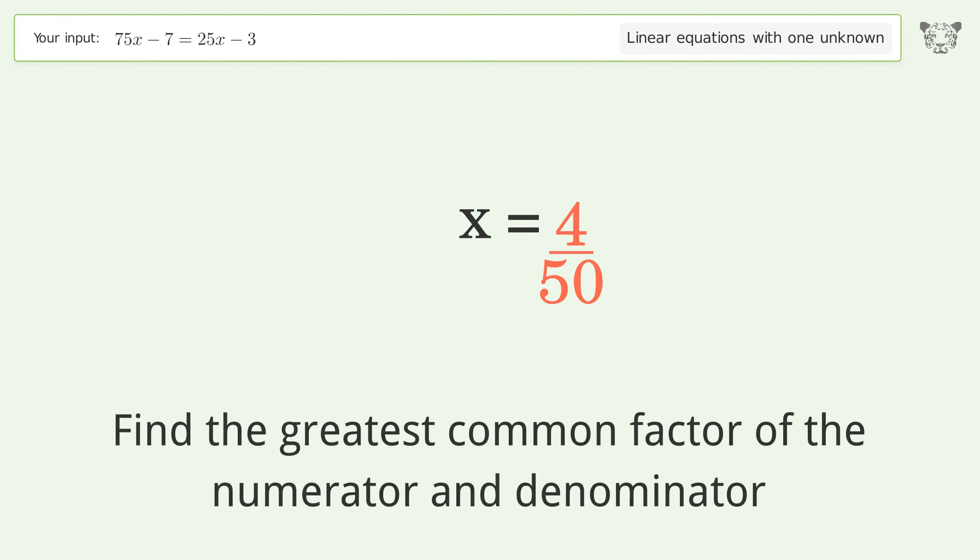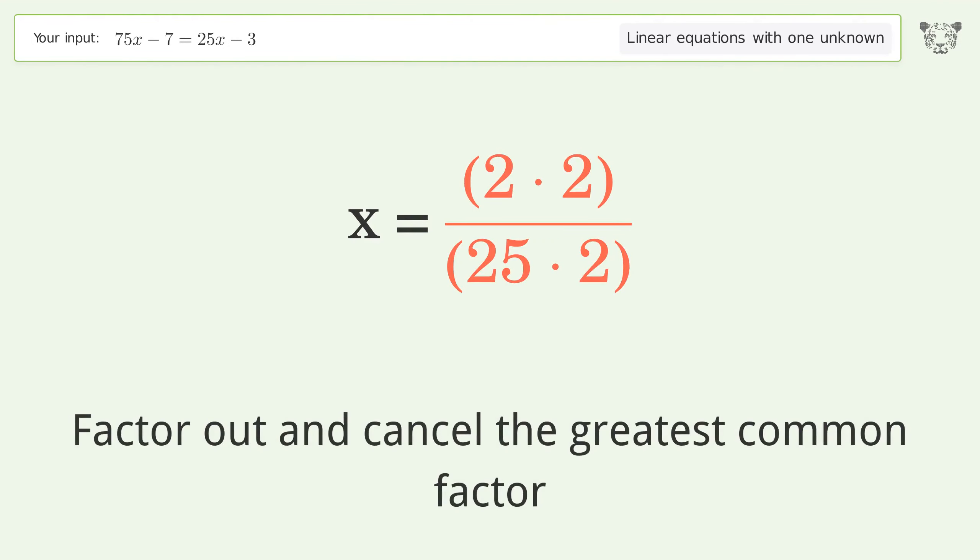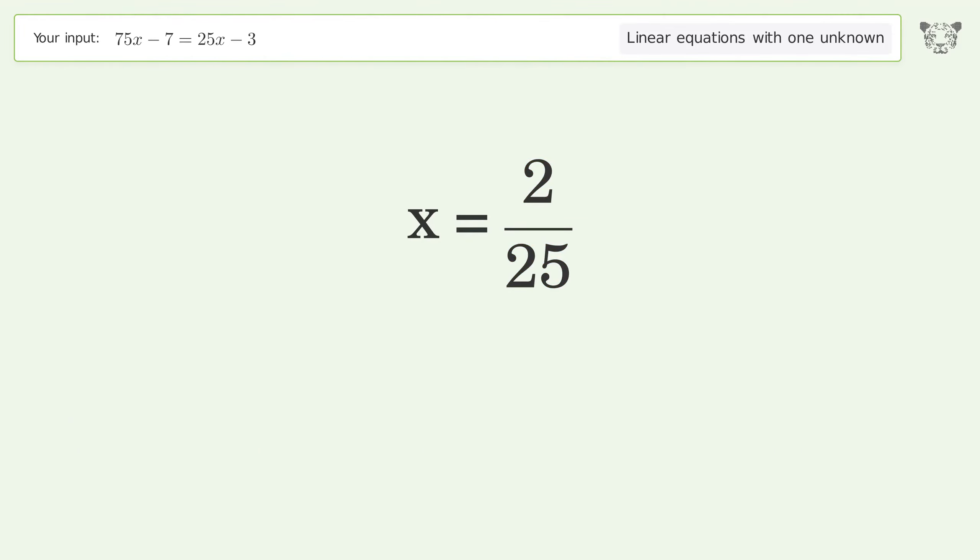Find the greatest common factor of the numerator and denominator. Factor out and cancel the greatest common factor. And so the final result is x equals 2 over 25.